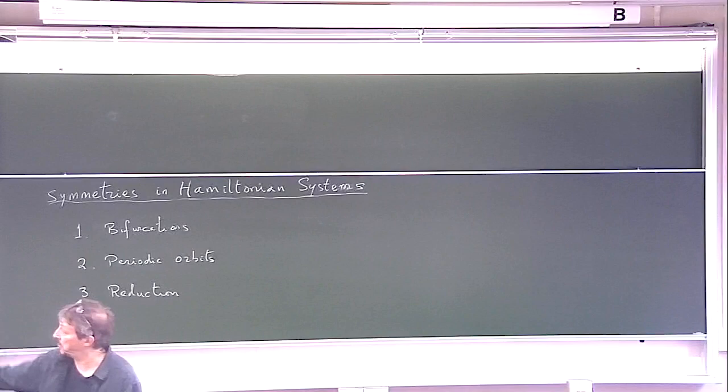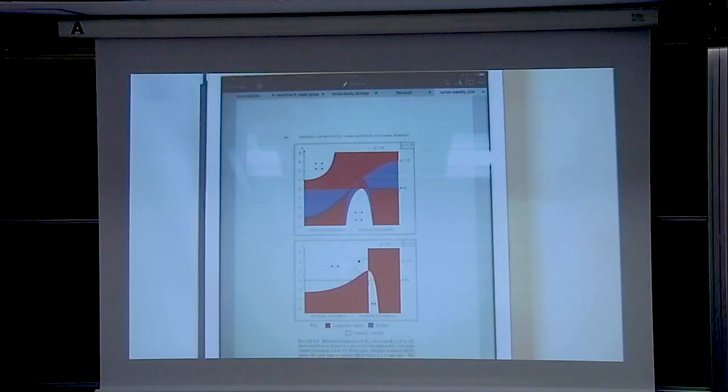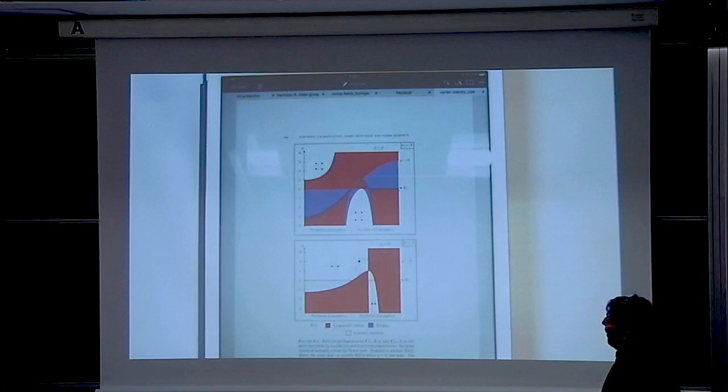I'm showing this picture as an example of bifurcations that arise in a particular Hamiltonian system, but I'll explain when we get there what different things mean.